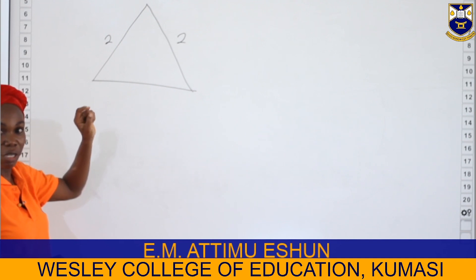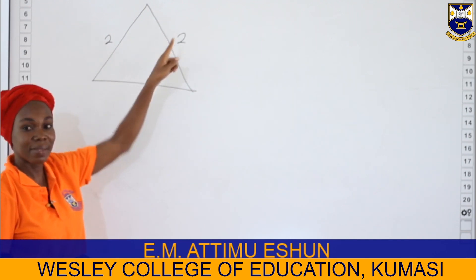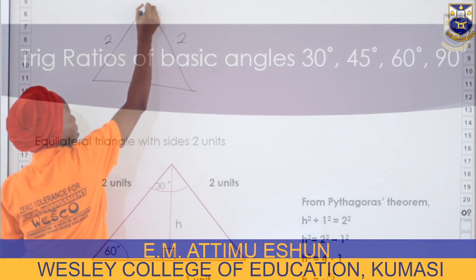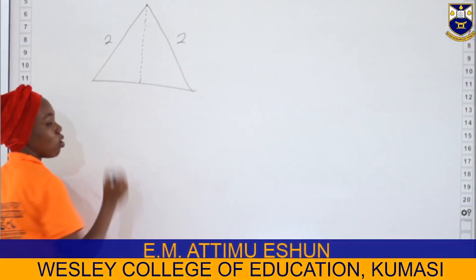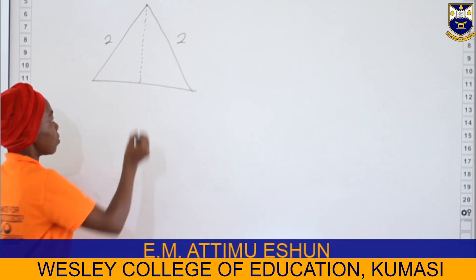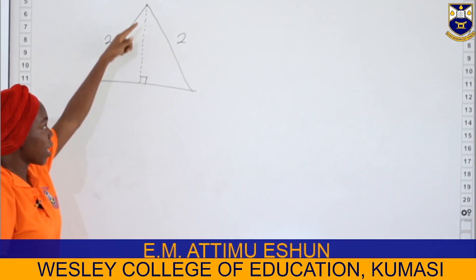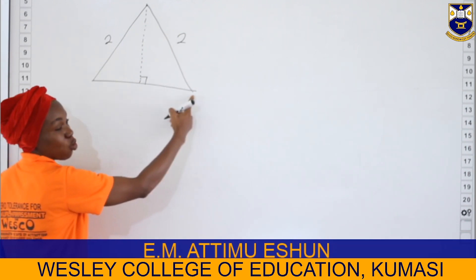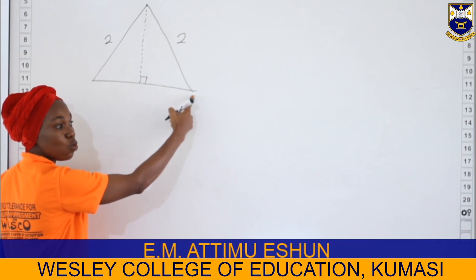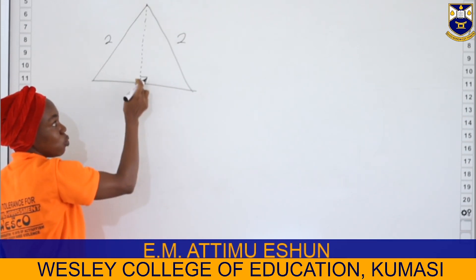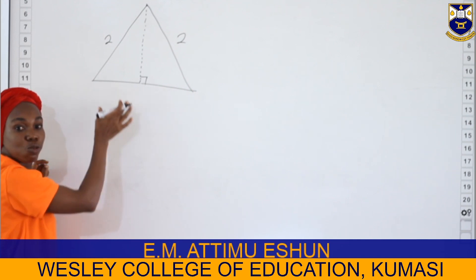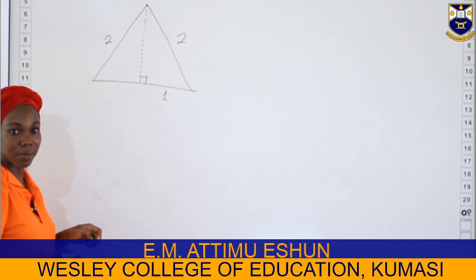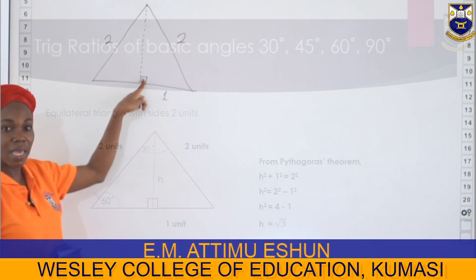Since it is an equilateral triangle, all sides have two units. If I draw the altitude of that triangle with dotted lines, it makes an angle of 90 degrees with the baseline. The baseline has a length of two units, so the altitude divides that into two equal parts, making one part equal to one unit.